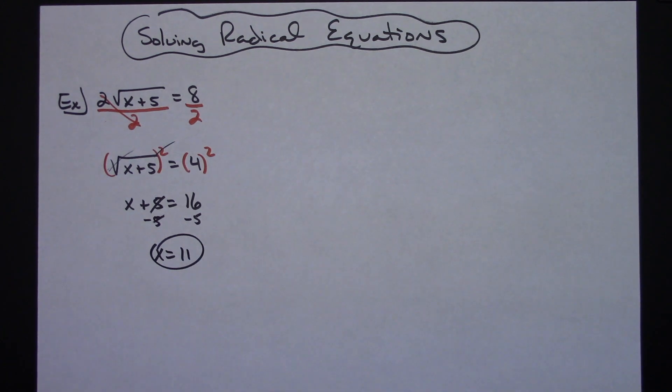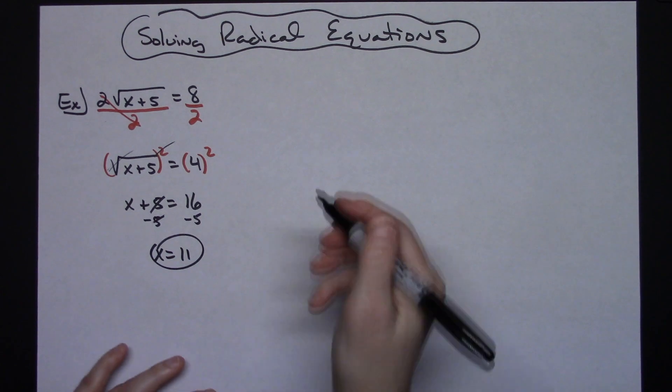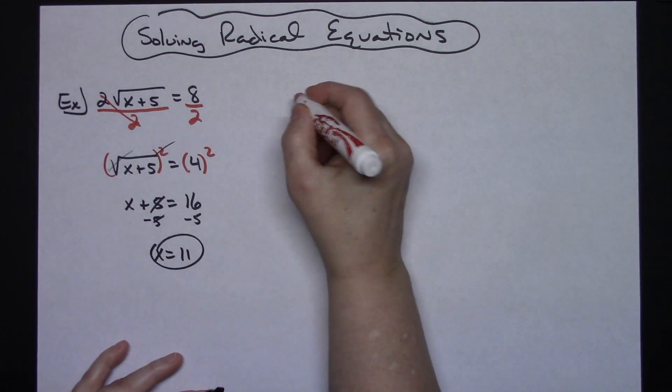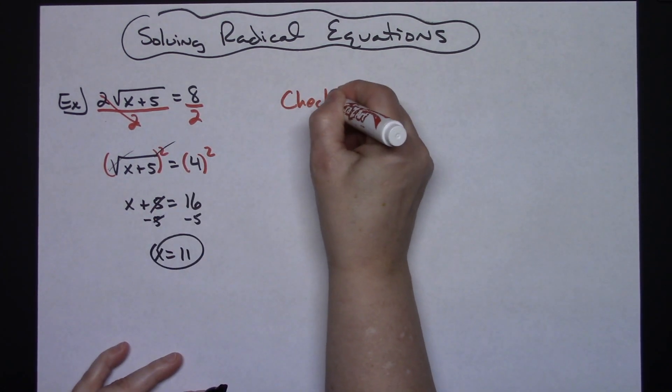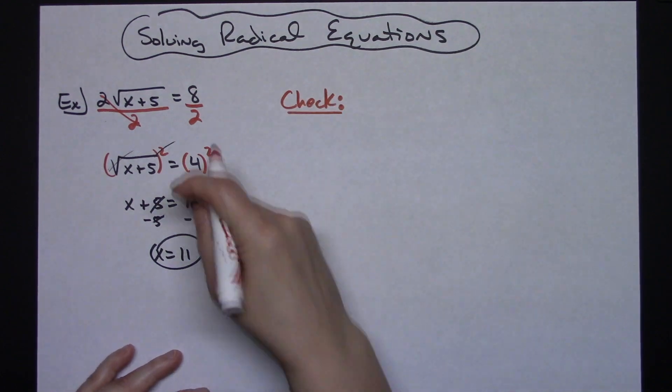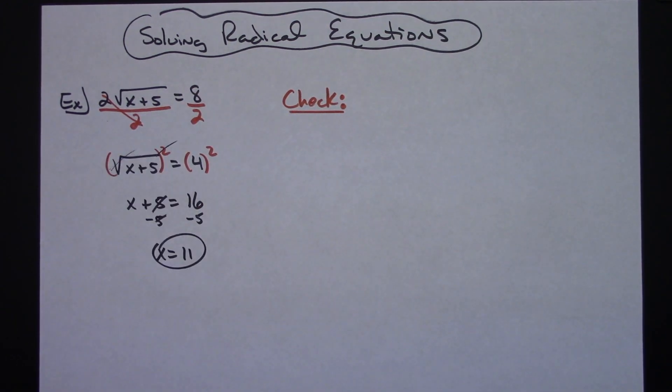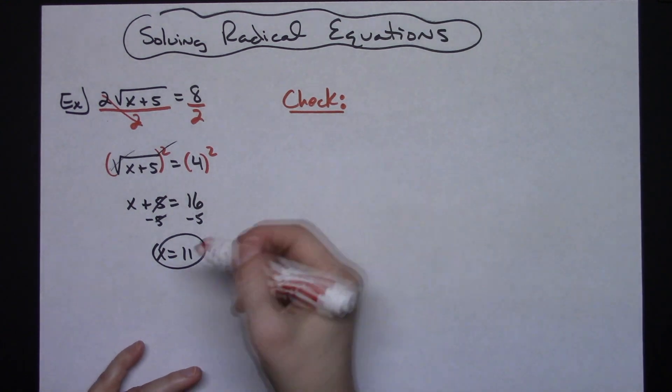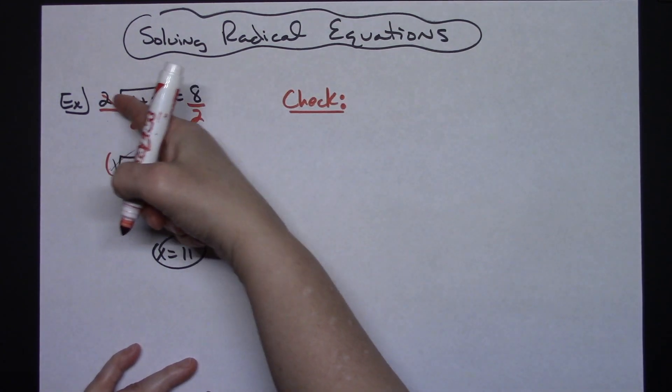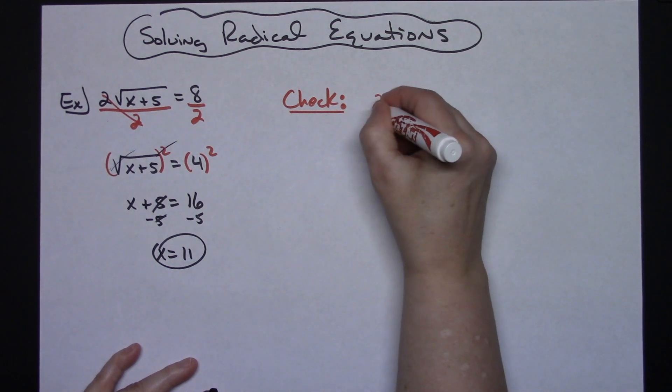Now, the thing with these radical equations—whether they're cube root, square root, or whatever—you really do need to go through a check because you can have extraneous roots. You could solve, get two different answers, and when you plug them back in, only one of them works. So what we're going to do is test 11 here. I'm going to take that original equation and...